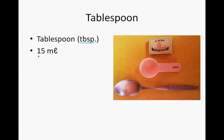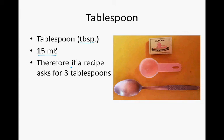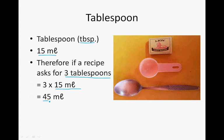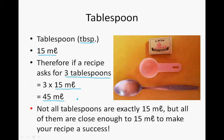A tablespoon is more or less 15 milliliters. Therefore, if a recipe asks for 3 tablespoonsful, we measure it in milliliters: 3 times 15 milliliters is equal to 45 milliliters. So 3 tablespoons is 45 milliliters. Not all tablespoons are exactly 15 milliliters, but all of them are close enough to 15 milliliters to make your recipe a success.